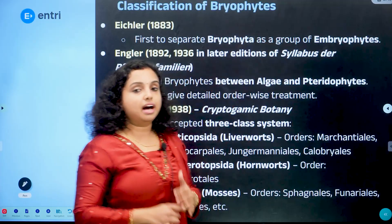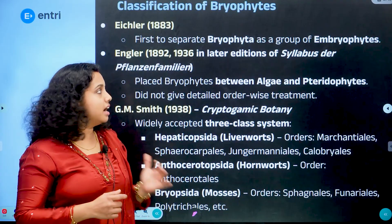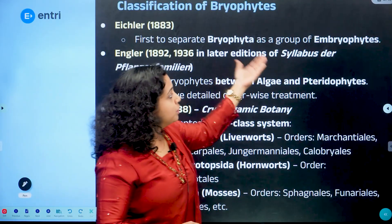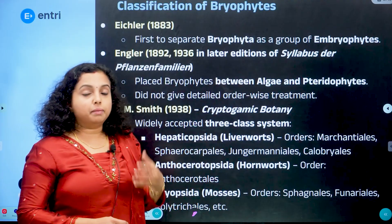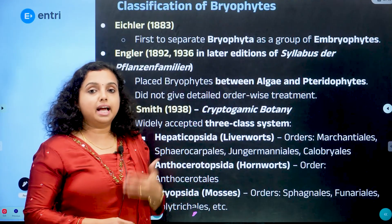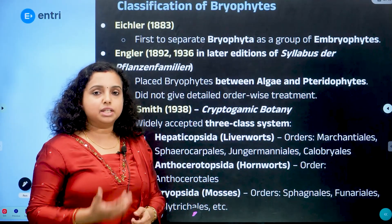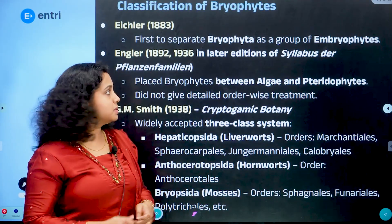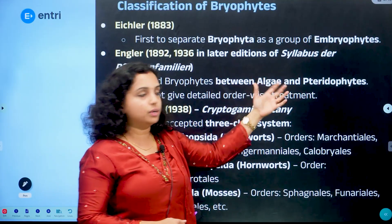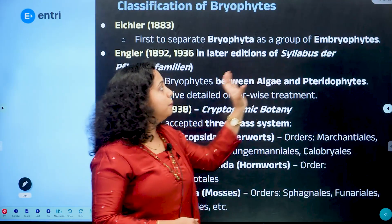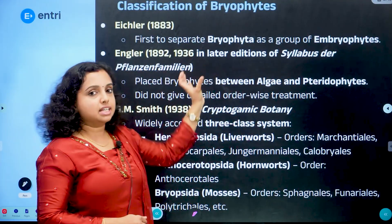Embryophytes is a large group — the higher plants group. Embryophytes are multicellular embryo-having plants, including angiosperms, gymnosperms, and plants with multicellular embryos. Eichler separated bryophytes as a distinct group within this.